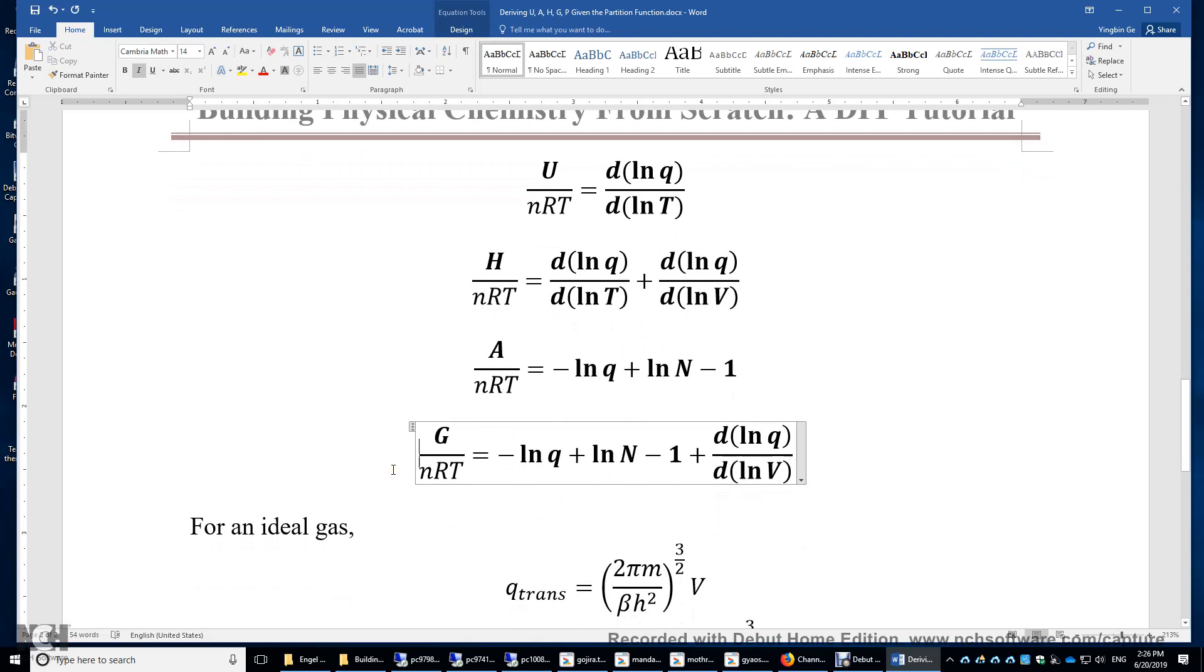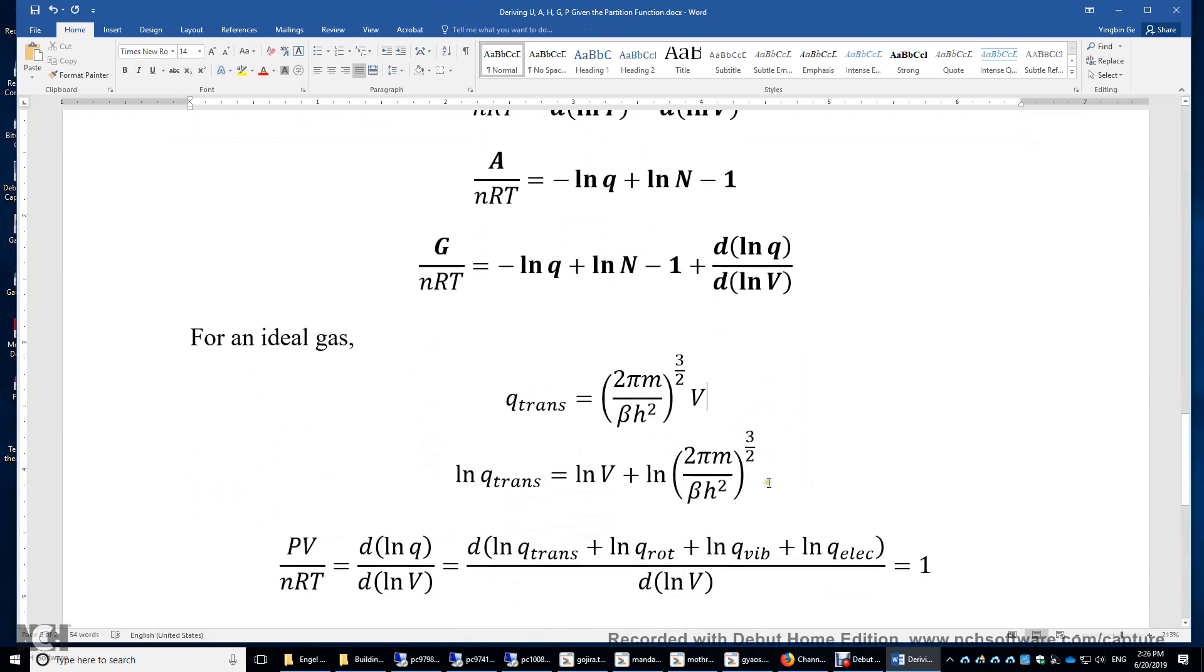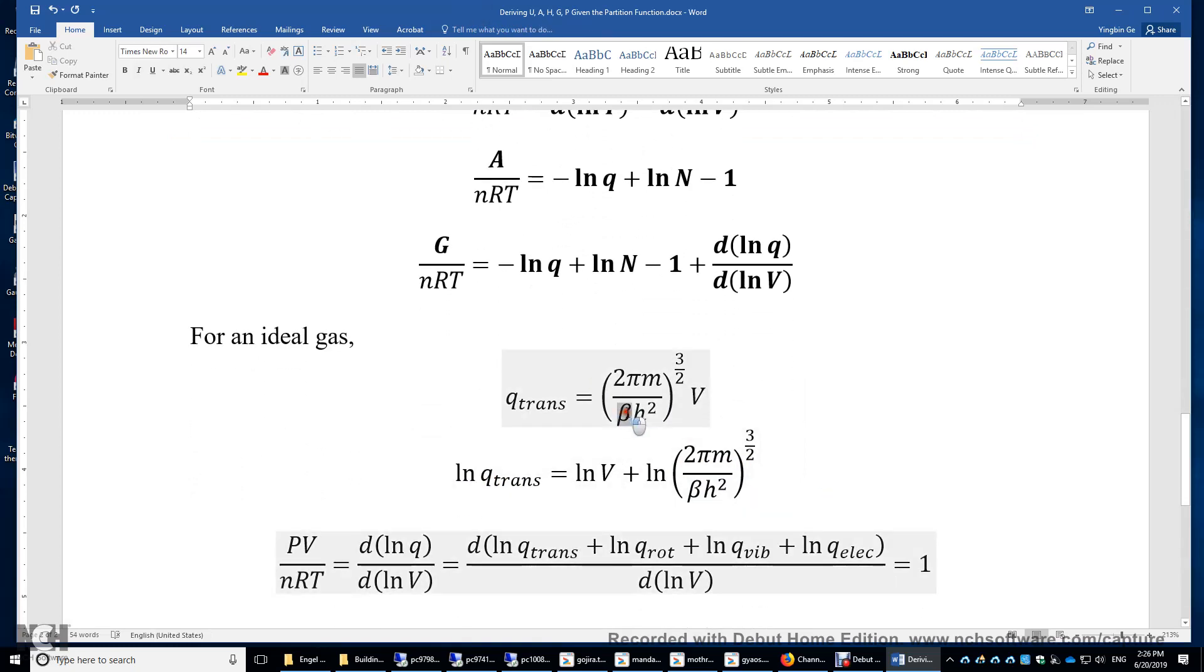Now, we will prove PV equals nRT for ideal gas. This is because for ideal gas, the translational partition function is a constant times volume. So I'm calling this beta constant because beta is independent of volume. And this is the form, the logarithm form. And PV equals nRT equals dLnq over dLnV. And we plug in this Lnq here.